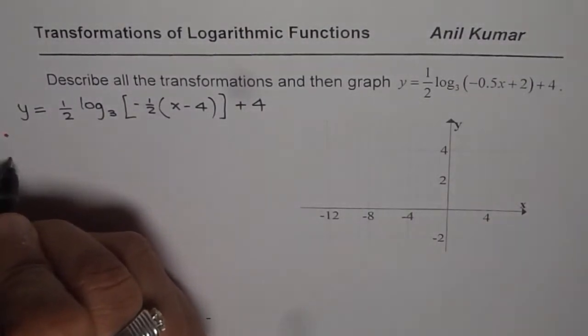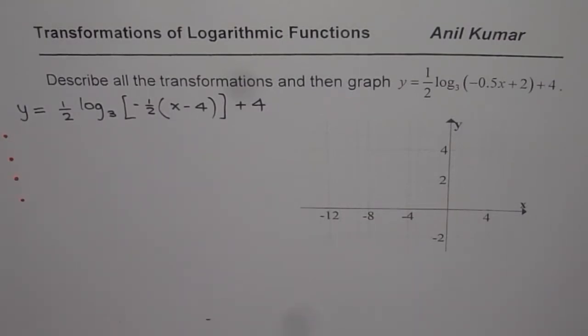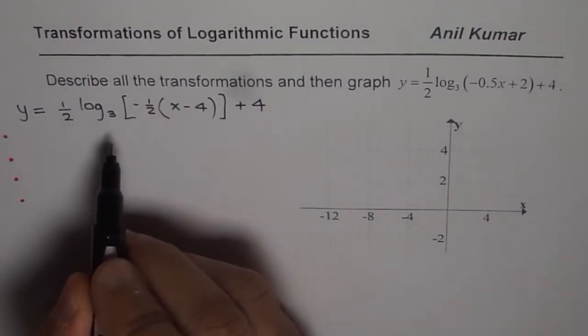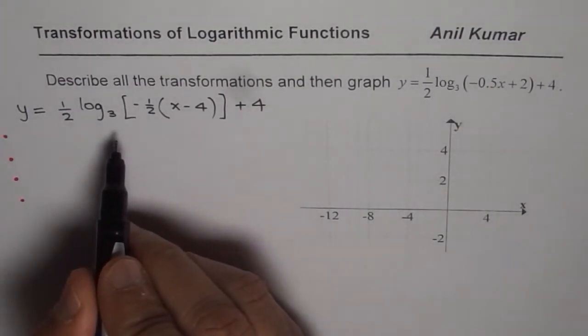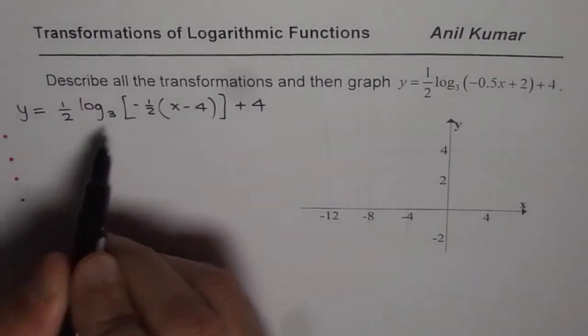Now once you write in this form it is very easy to write transformations. So from here let us write down the transformations. So transformations should be written in a particular order. You should do multiplication, that is stretches and compressions and reflection first, and then the translation. So if we begin from left to right we always get the right order.